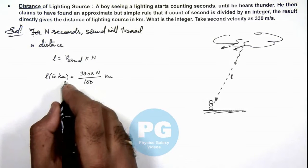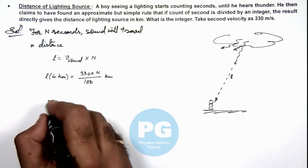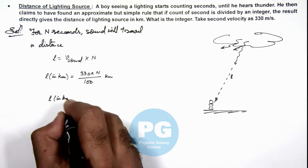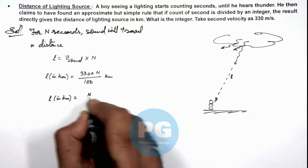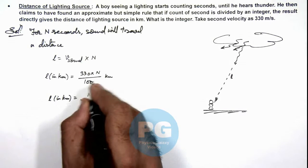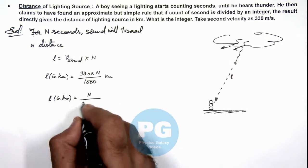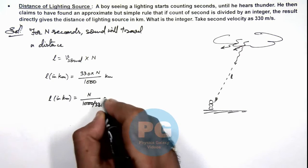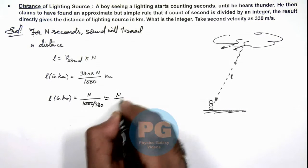So here we can rearrange the terms that L in kilometers can be given as N divided by 1000 divided by 330, which can approximately be written as N by 3.